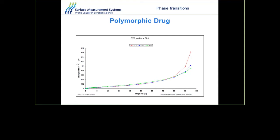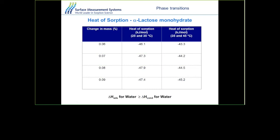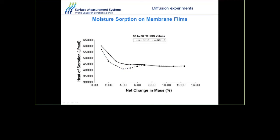Heat of sorption measurements give information about the sorption mechanism. You run the same experiment at two or three different temperatures, and from these results you can see, for example, that the heat of sorption is very close to the heat of condensation for water — indicating the water molecules are condensing on the surface rather than interacting with it. For some membranes, the heat of sorption for N112 membrane is greater than for NR112, indicating higher surface interaction, but both converge at higher relative humidity as condensation dominates.